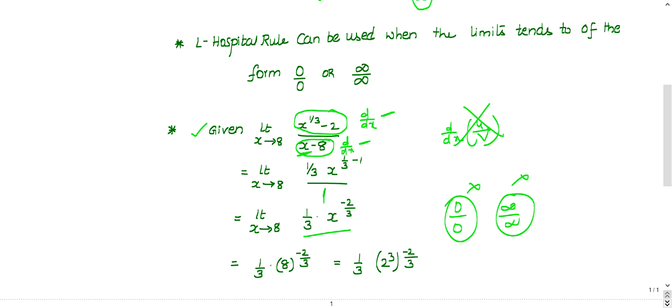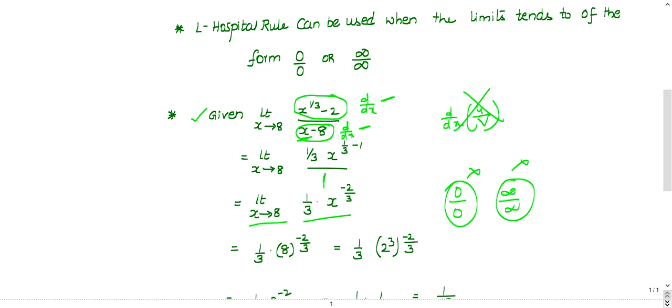Until and unless you get some integer, this method should be repeated. Now you can substitute x equal to 8 and check whether you are getting 0 by 0 form or infinity by infinity form or you get a number or a constant. If you get a number or a constant, you can terminate the limit there.